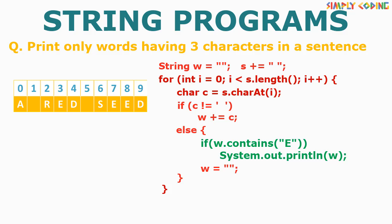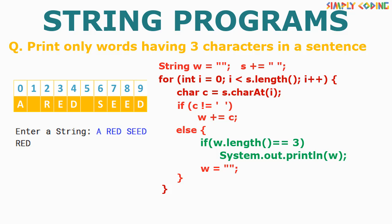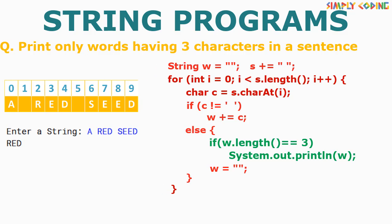The program could also be to print only words which have three characters. We will just change our if condition to check which words have length three. If yes, we will print it. This will give us the desired output and the program.